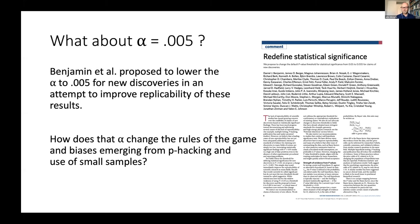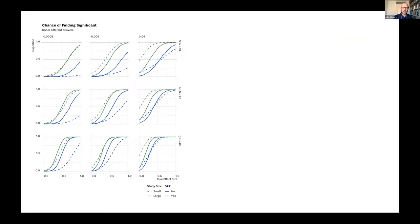So let's redefine statistical significance — at least for the first study in the field, for novel discoveries. That's what Benjamin and his big group of co-authors recommended, when we go to 0.005. The question then is: how does that change the rules of the game — as we call it in the title of the paper — how does it change things? Does it still pay off to run small studies? Probably not.